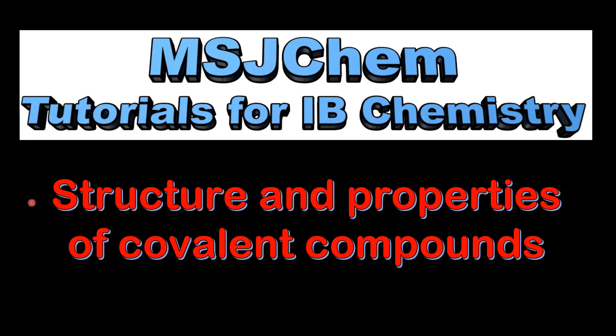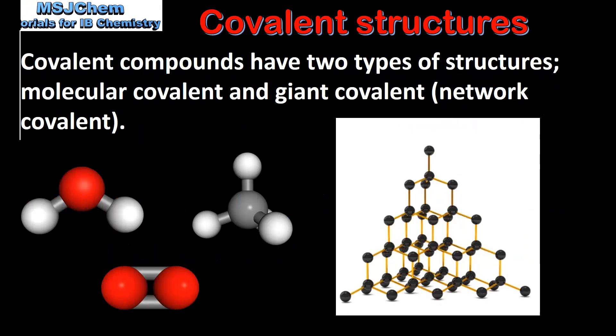This is MSJ Chem. In this video I will be looking at the structure and properties of covalent compounds. Covalent compounds have two types of structures: they are molecular covalent and giant covalent.